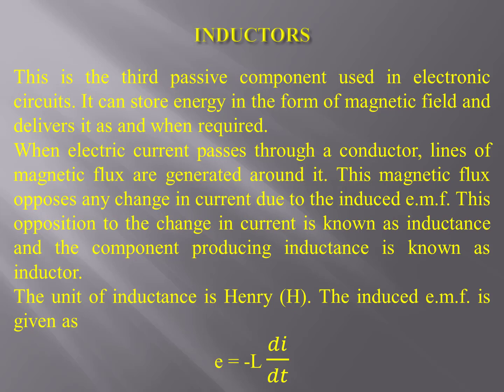This opposition to the change in current is known as inductance, and the component producing inductance is known as an inductor. The unit of inductance is Henry, denoted by capital H. The induced EMF is given by E = −L di/dt, where E is the induced EMF in volts at any instant, L is the inductance in Henry, and di/dt is the rate of change of current. The negative sign indicates that the induced EMF opposes the cause of the change in current.